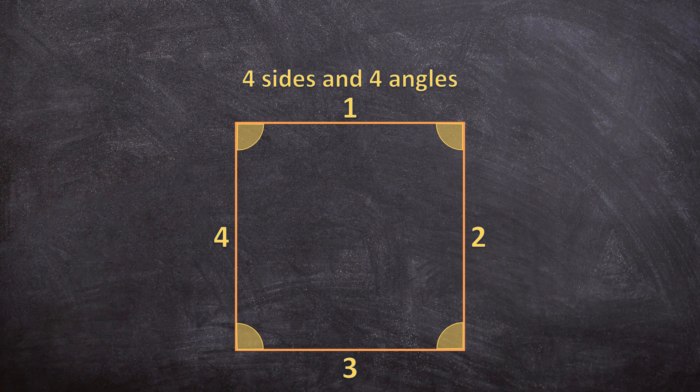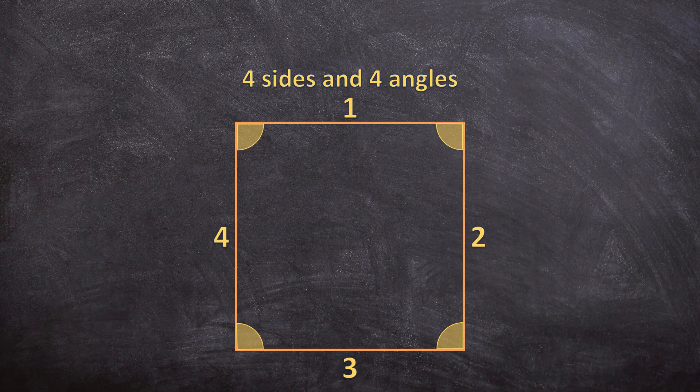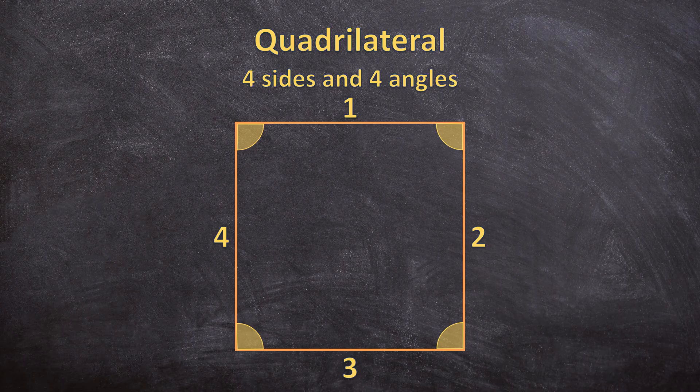This polygon has 1, 2, 3, 4 sides and it also has 4 angles. So 4 sides and 4 angles. I know you would want to call this a square and it is a square, but a square is a specific type of quadrilateral. So a polygon with 4 sides and 4 angles is called a quadrilateral.